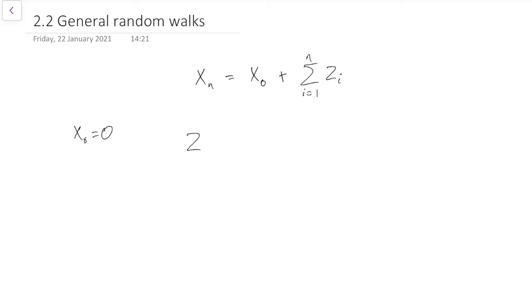And these Zi's, they kind of represent how you move each time. So for us, Zi was either equal to plus 1 if we move up, or minus 1 if we move down, so it's plus 1 with probability p, minus 1 with probability q, and these are all iid, independent and identically distributed, and the Zi's are independent of X0 as well.